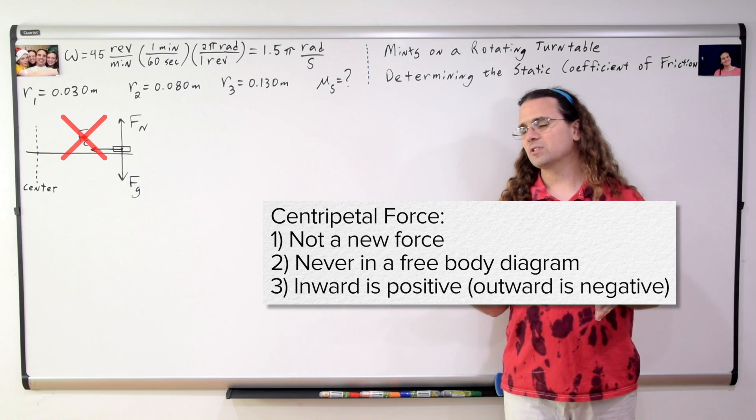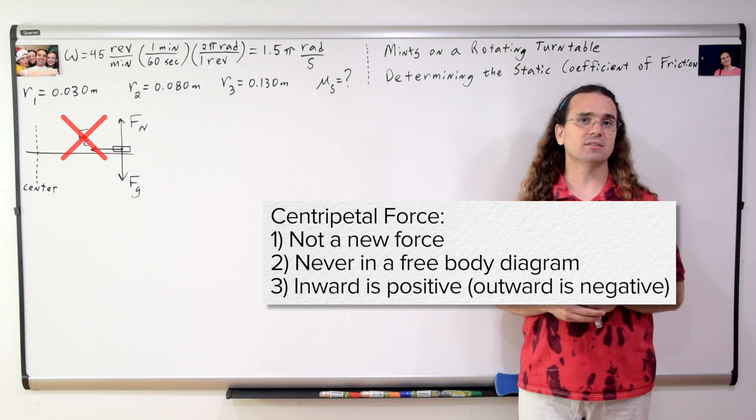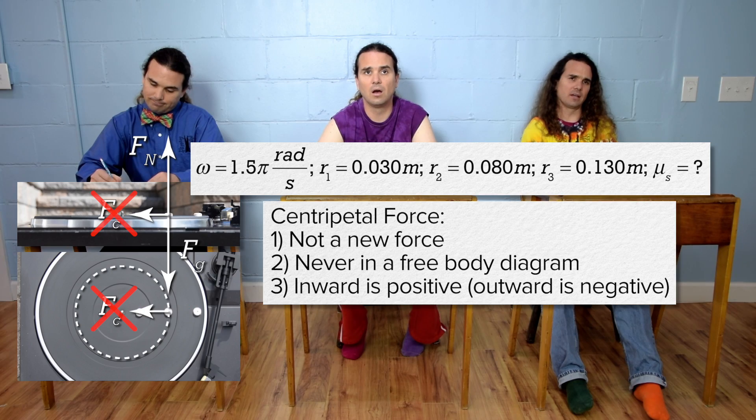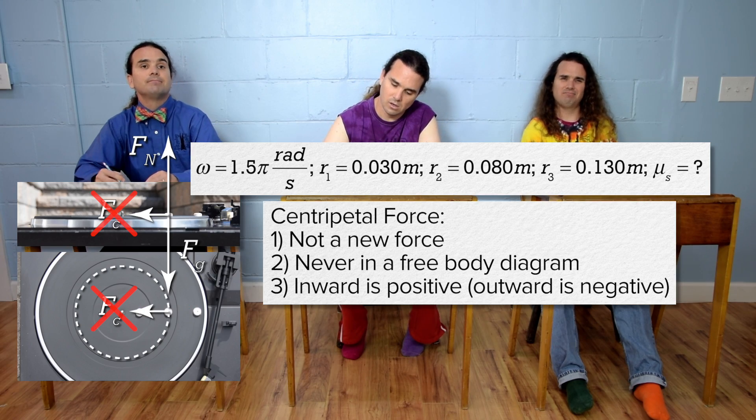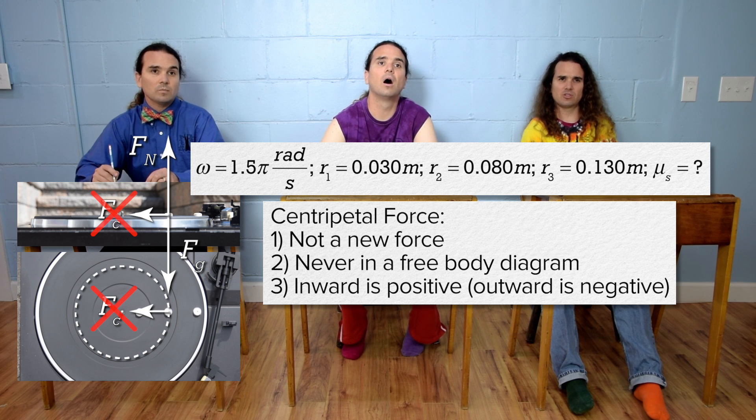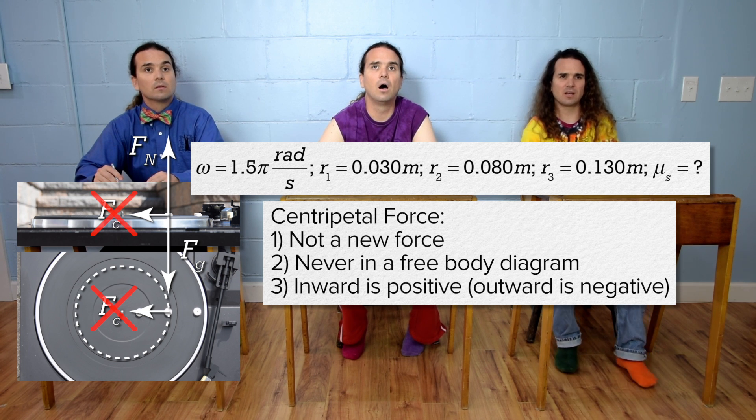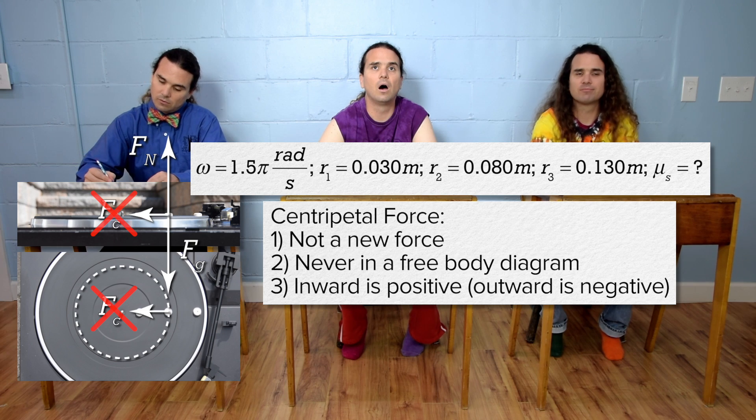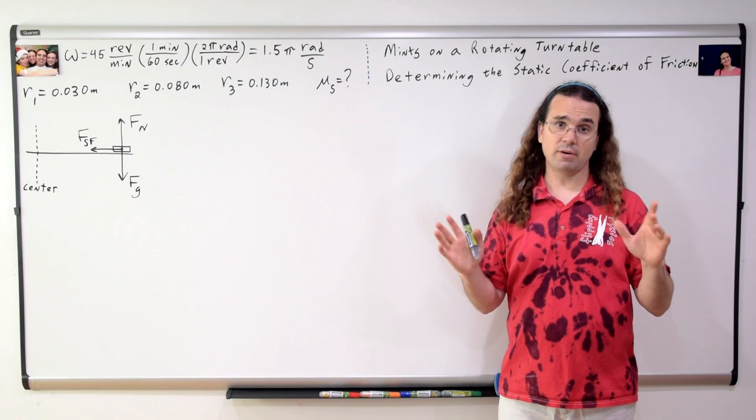So Bo, what force is acting inward on the mints to keep the mints moving in a circle? Okay, that is the force the surface of the record causes on the mints, which is the force of static friction. That is correct.